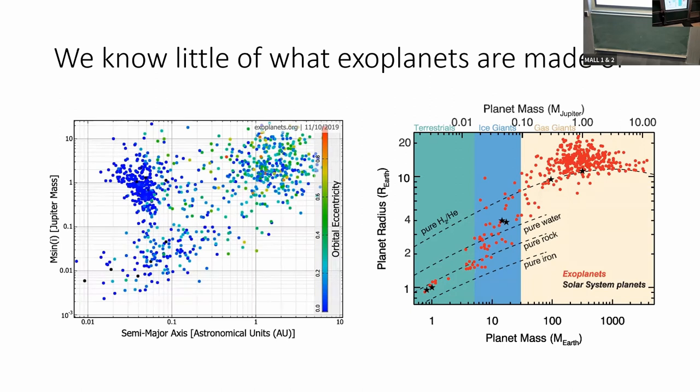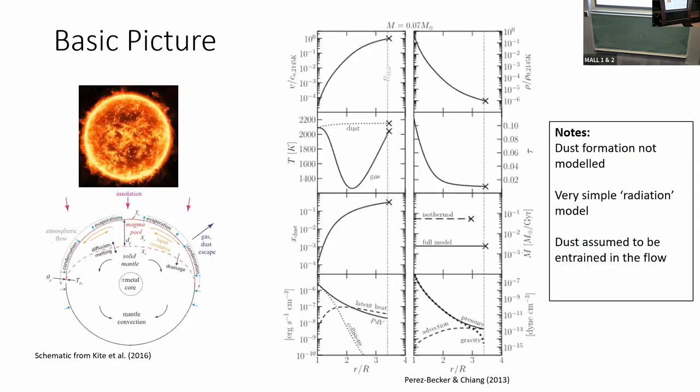These catastrophically evaporating planets are interesting because essentially they're the first way that we can have direct access to what the core of the planet might be made of, by looking at the evaporation products. So that's why I found these things exciting.